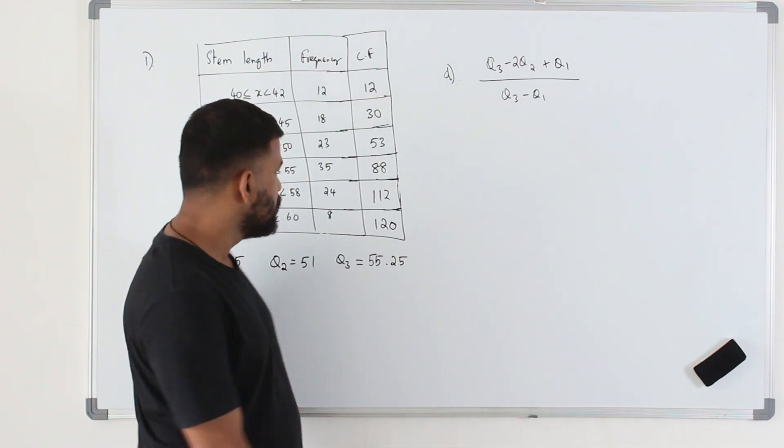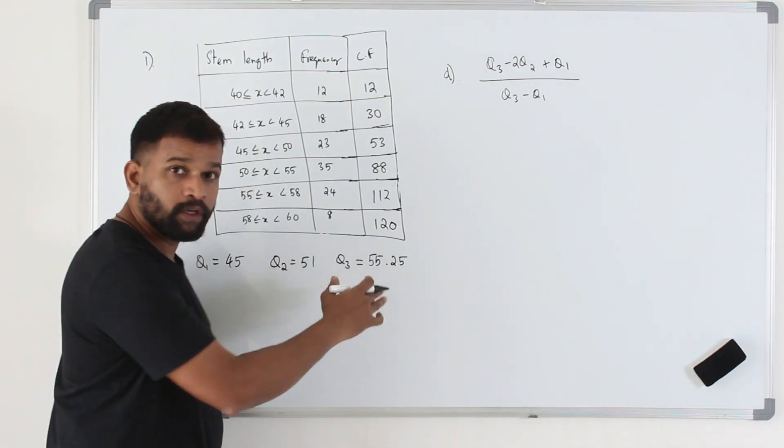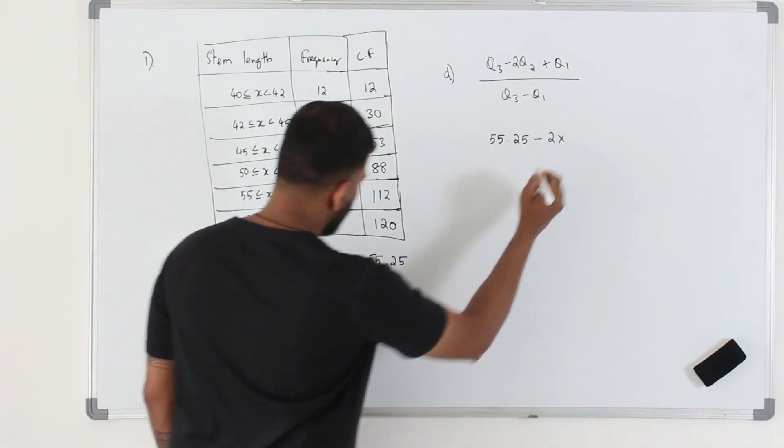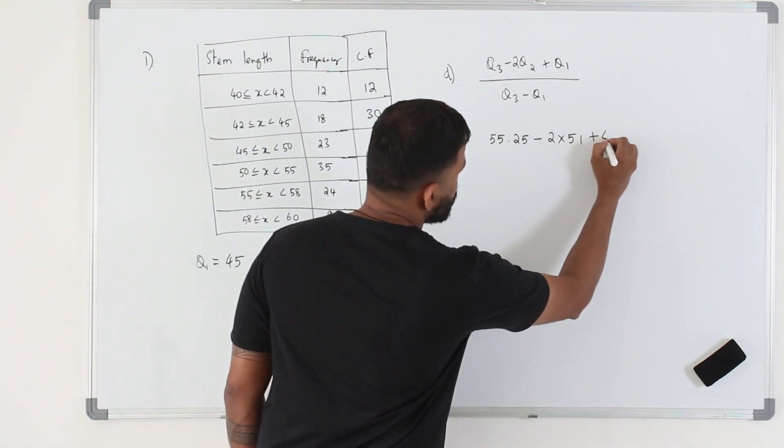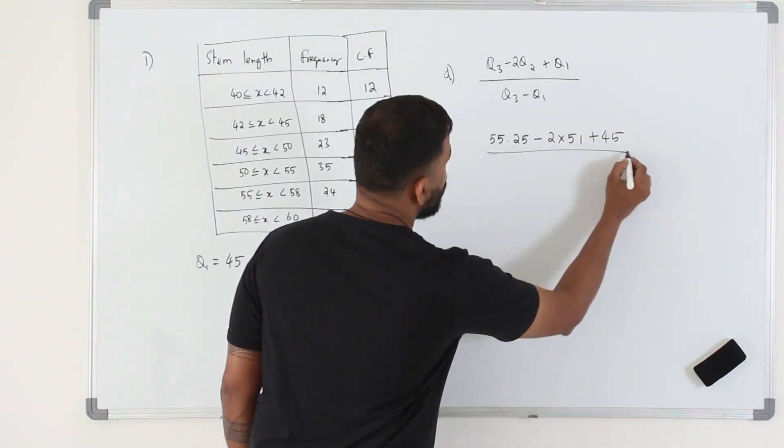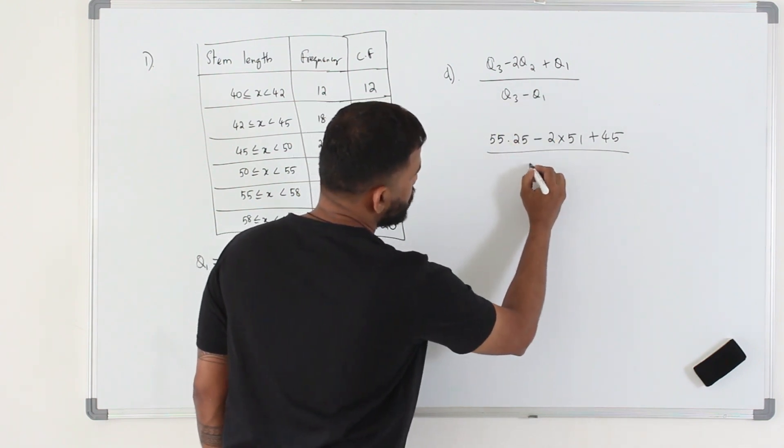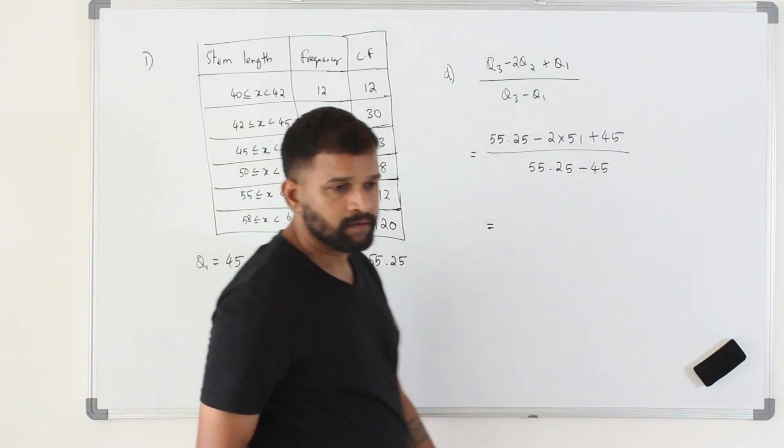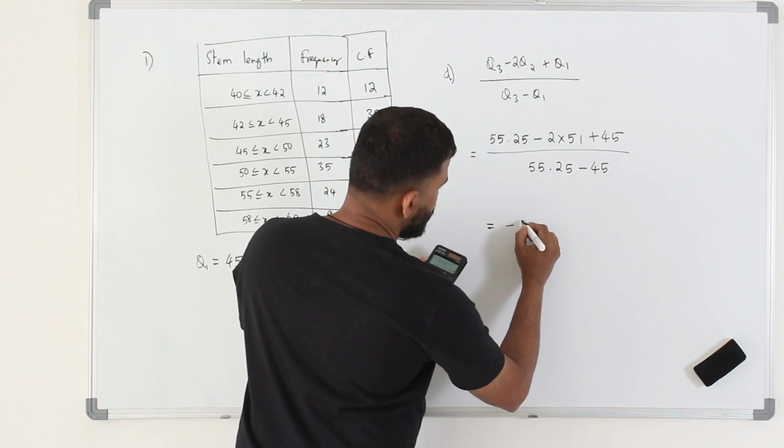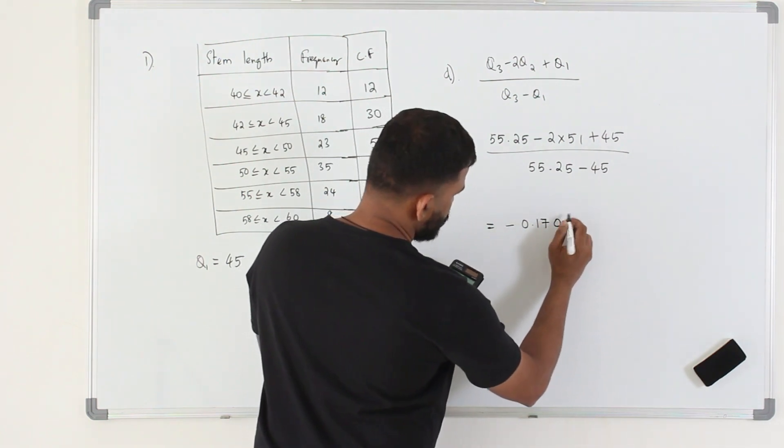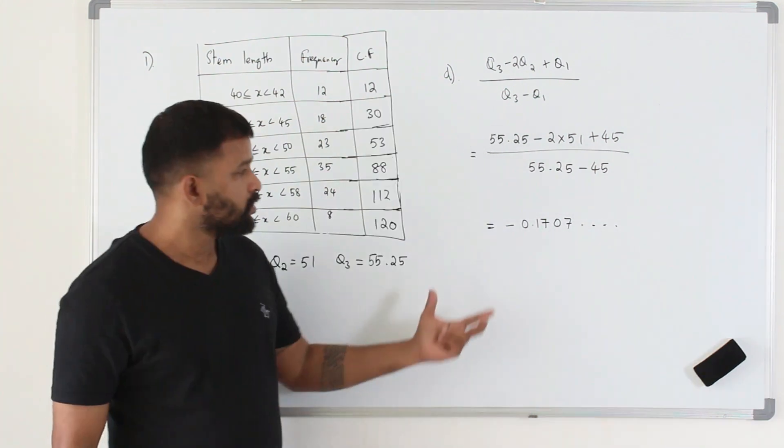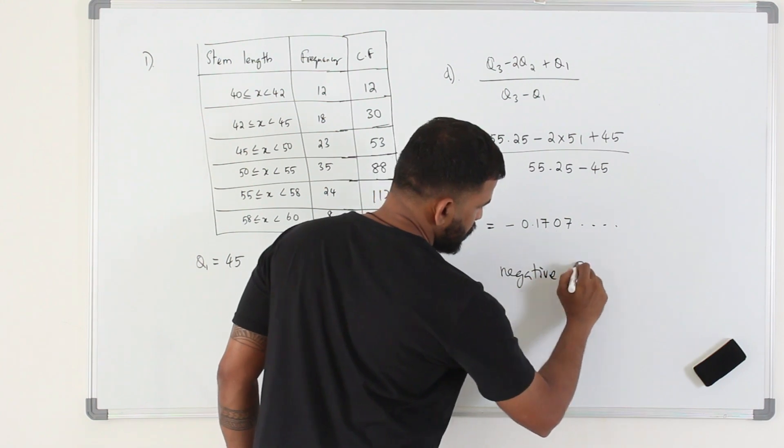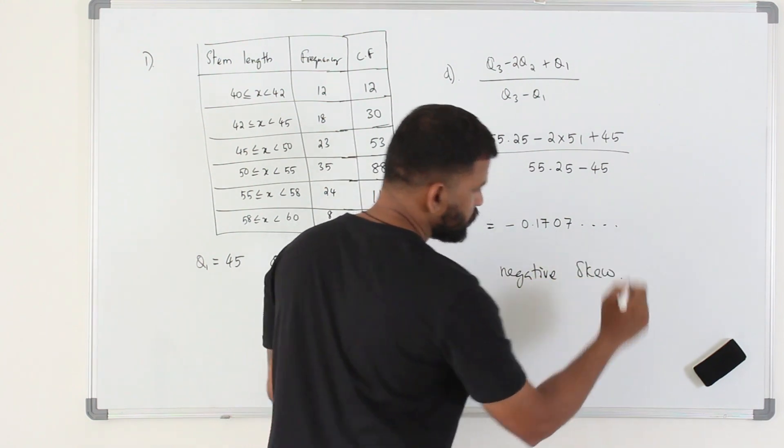So we already have the value of Q1, Q2, Q3, substitute in here. Q3 is 55.25 minus 2 times Q2 which is 51 plus Q1 is 45, everything over the interquartile range. 55.25 minus, calculate this. So the value is negative 0.1707. So it's a negative number. So you can simply write it's a negative skew. That's it.